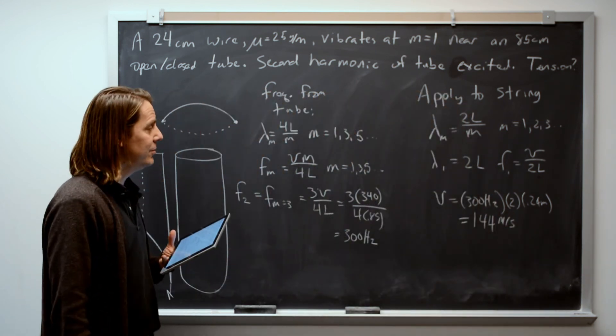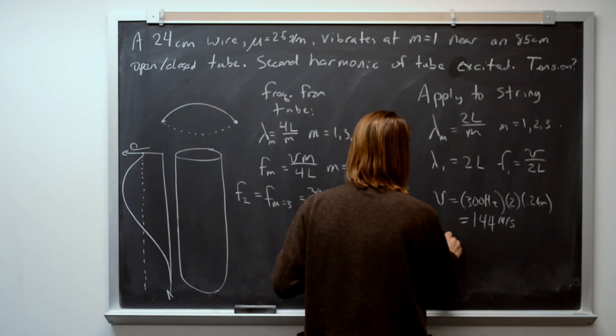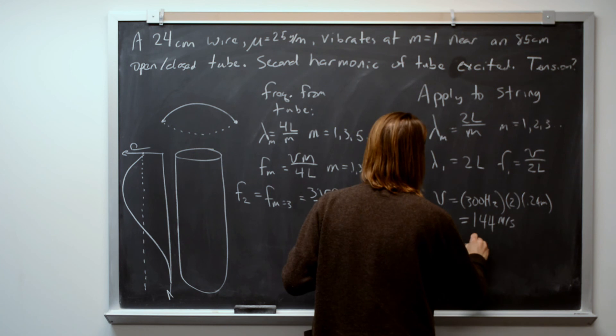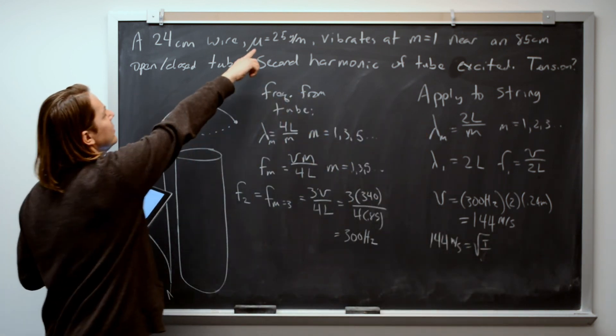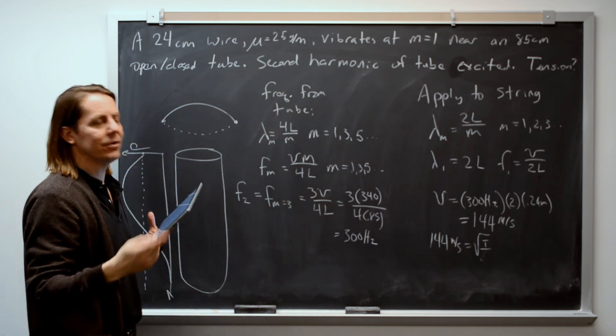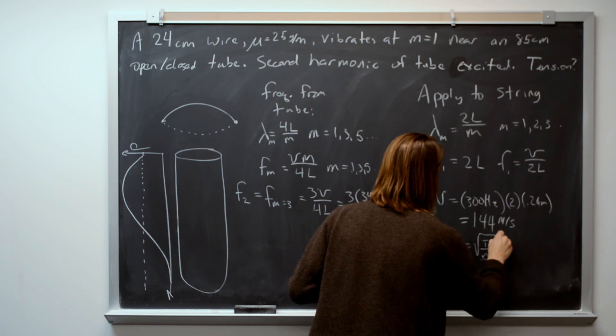So now we have the speed of a wave in the string. And that's equal to square root of T over 144 meters per second. Square root of tension over the mass density, which is 25, but be sure to convert it to kilograms. So it's 0.025.